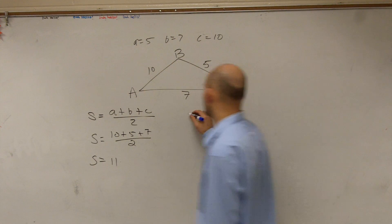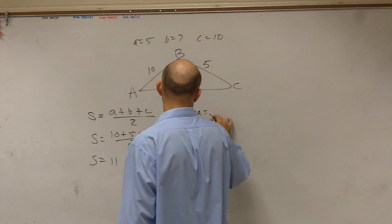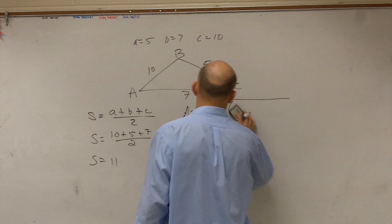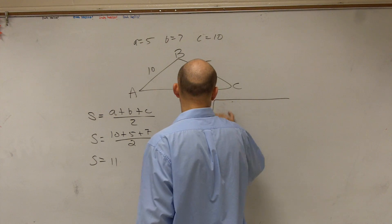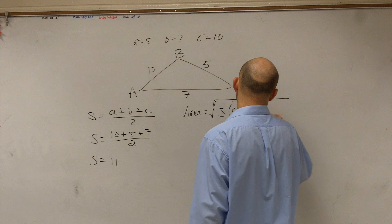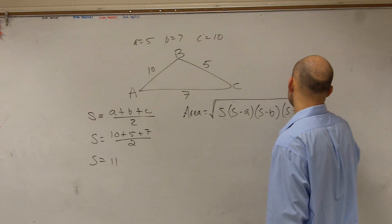OK, so we have 22 divided by 2 equals 11. Then, to find the area, and these are just in units, let's write the formula. Area equals the square root of s times s minus a times s minus b times s minus c.